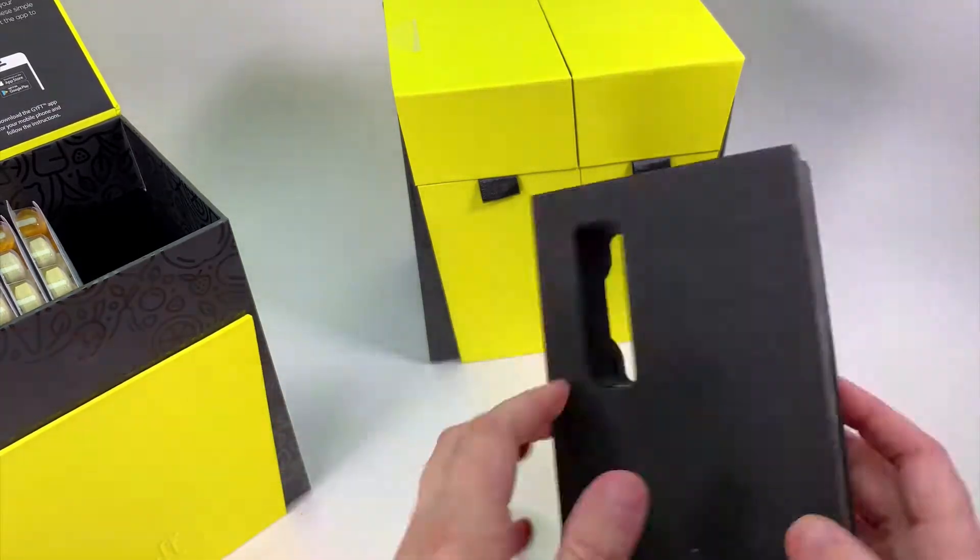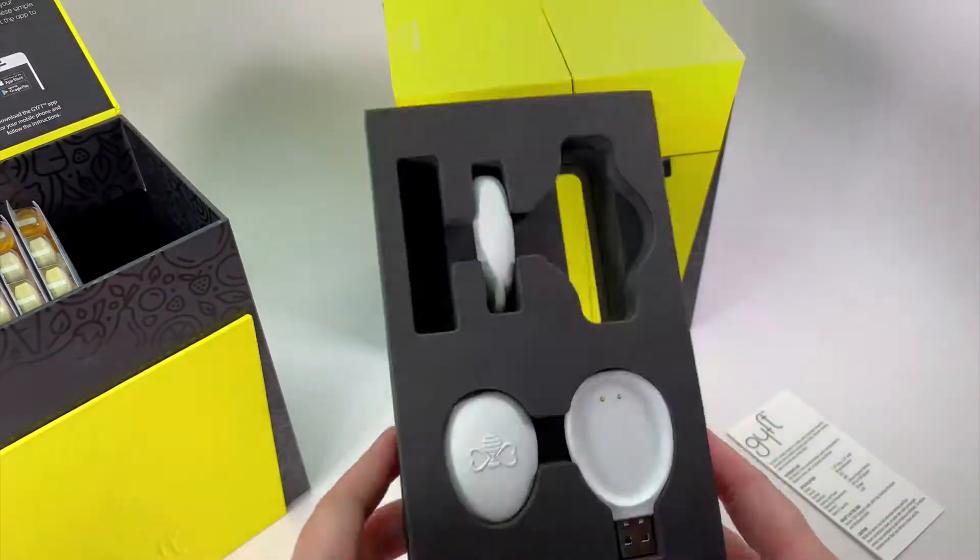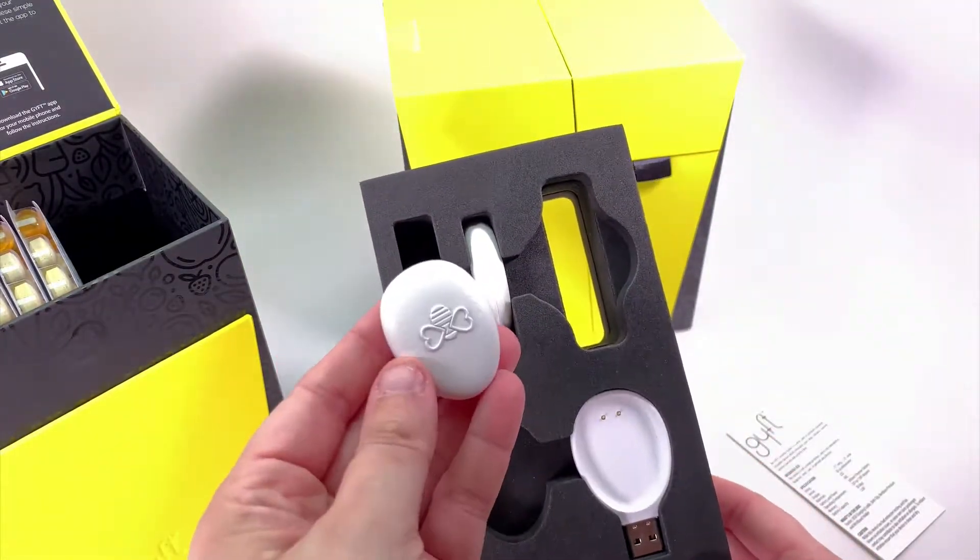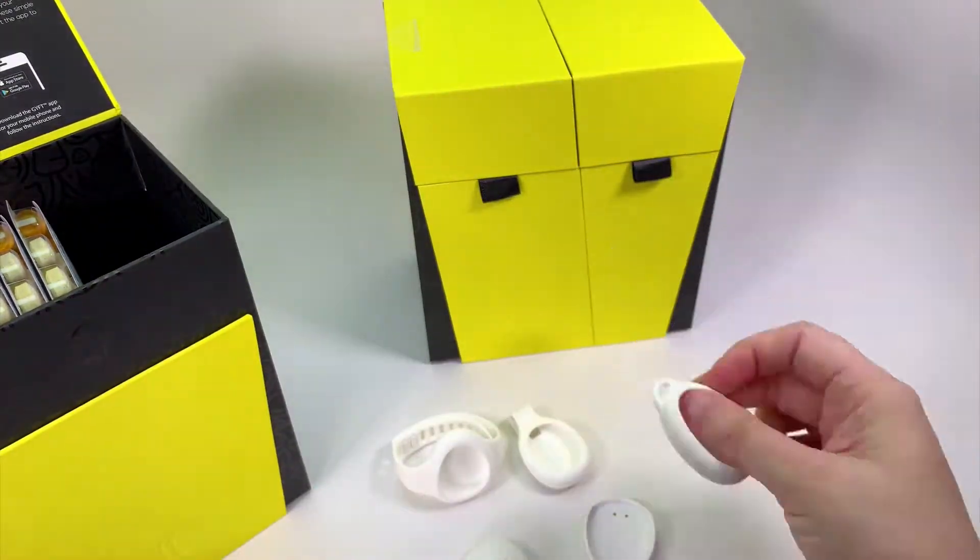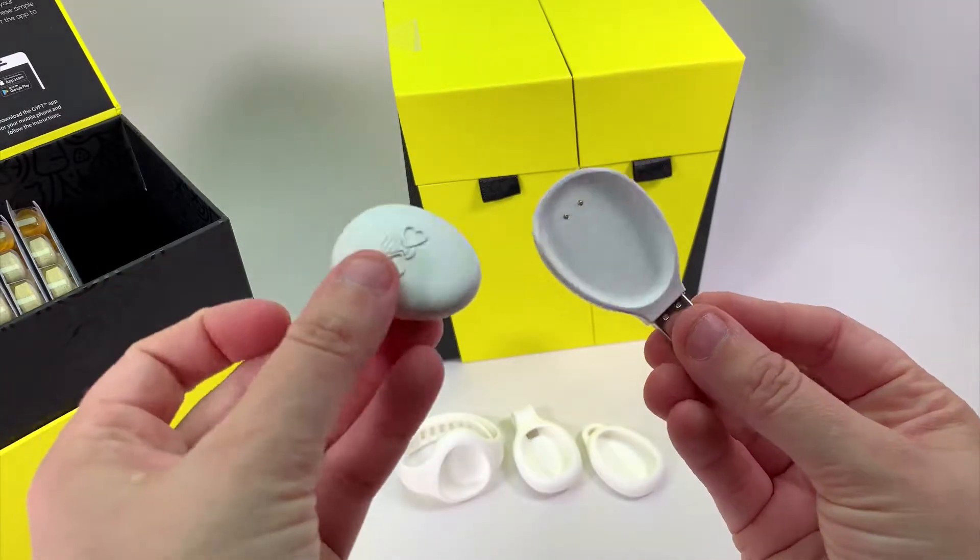It comes with a wristband, a necklace pendant, a keychain fob, and a charging plate. Each of the wearable accessories is made from silicone and the pendant snaps easily into place.